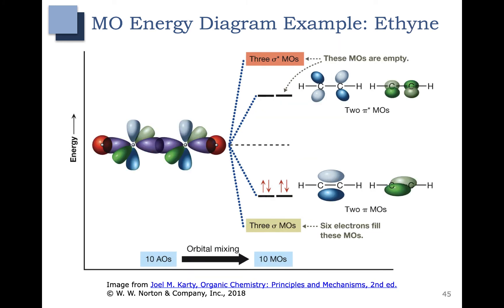In our last molecular orbital energy diagram example, let's look at ethine. Ethine has a carbon-carbon triple bond. We have three sigma bonds, so that's why we have three sigma molecular orbitals. We also have two pi bonds, which is why we have two pi bonding molecular orbitals. In total, we have ten atomic orbitals mixing to make ten molecular orbitals.